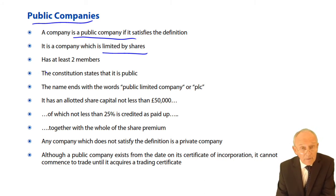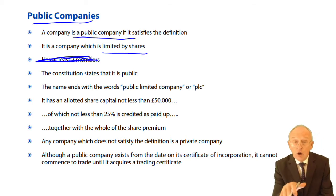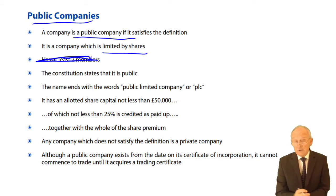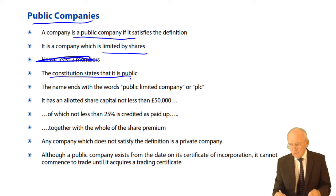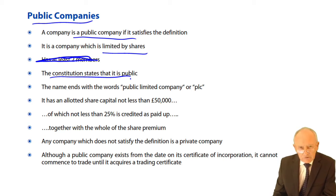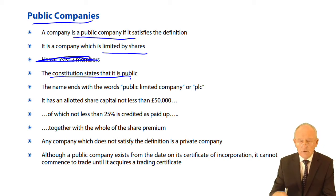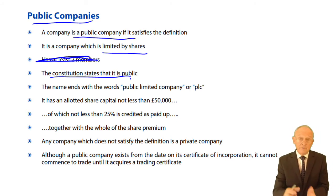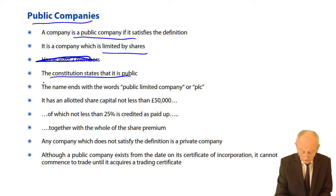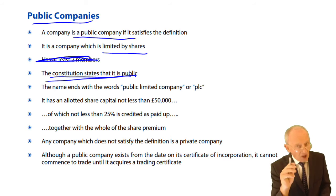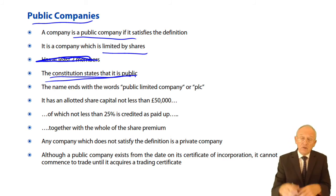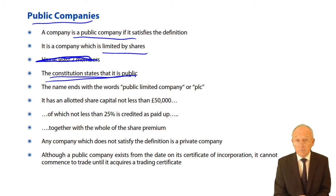A public company is limited by shares — not limited by guarantee and not unlimited. It has at least one member. It used to have to have at least two, but that is no longer part of the public company definition — so the course notes need updating. The Constitution is now the Articles of Association. The Memorandum is no longer part of the Constitution. The Constitution consists of the Articles, any resolutions that amend the Articles, and any contracts that affect the Articles. The Constitution must state that it is a public company.